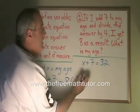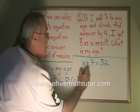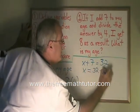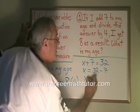Now I just have to move the 7 to the other side of the equals, x equals 32 minus 7, and I know my answer, x is 25.